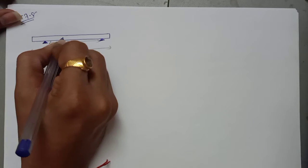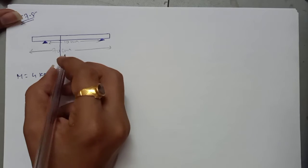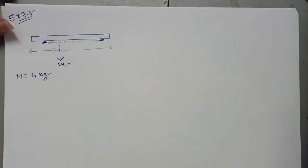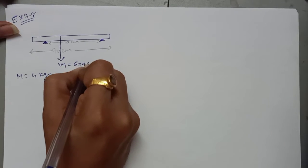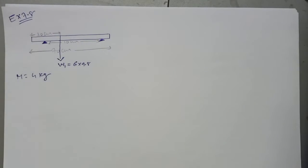A six kilogram weight is suspended at 30 centimeters from one end. Let's call this weight W1. The value of W1 is W = mg, where mass is 6 kg, so W1 = 6 × 9.8. This weight acts at 30 centimeters from one end.